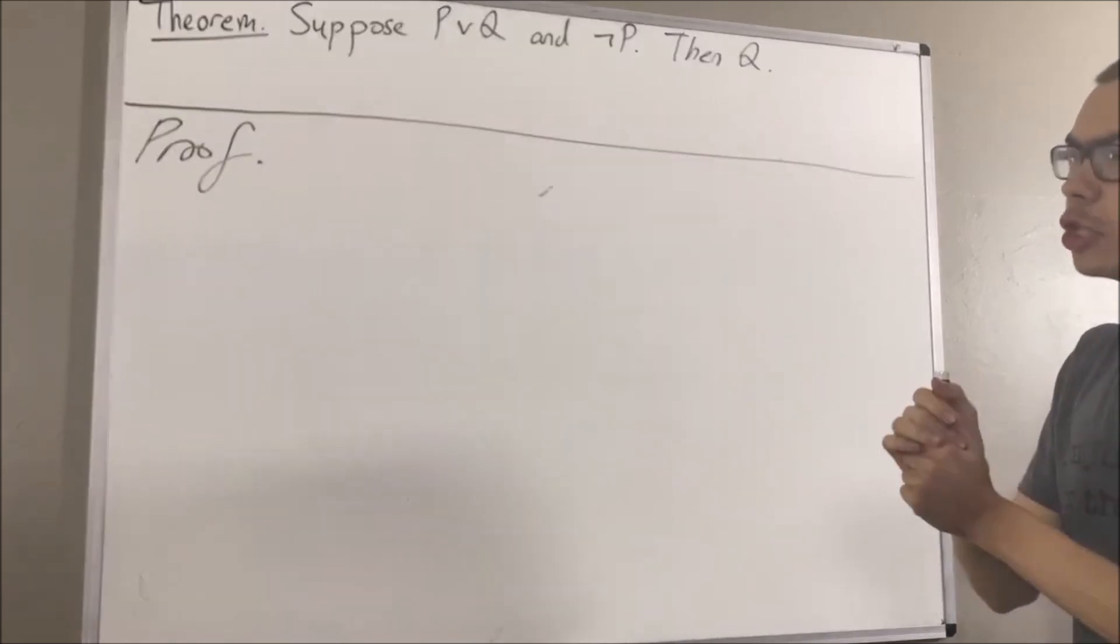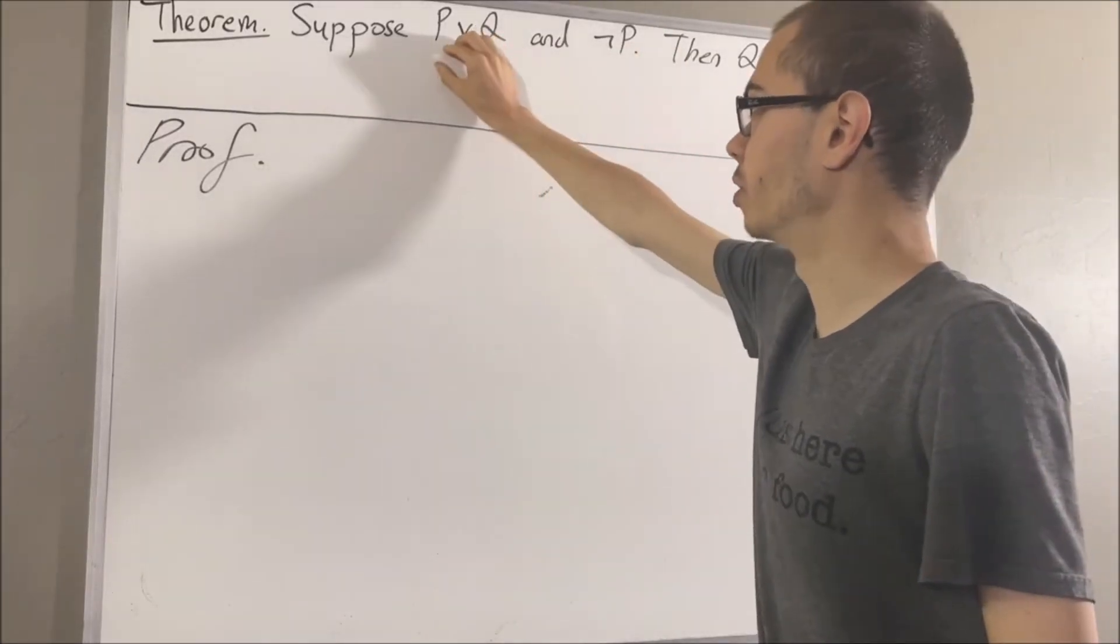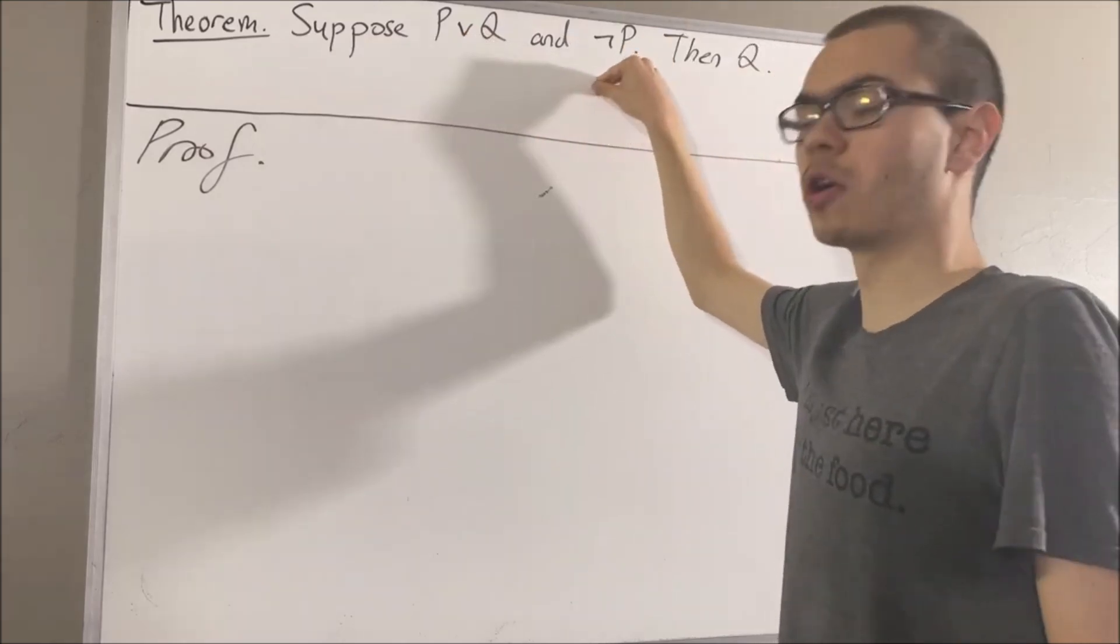Let's get into the proof. To start out, let's assume that P or Q and not P are both true.